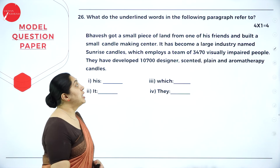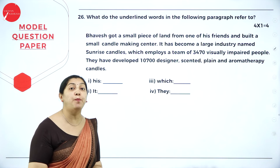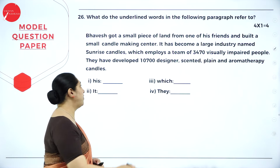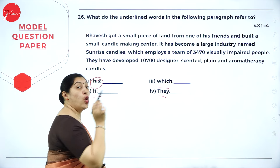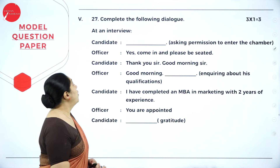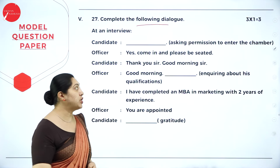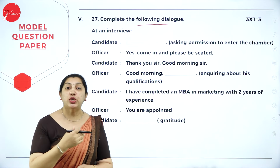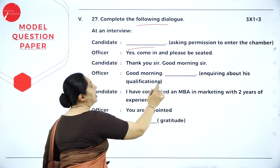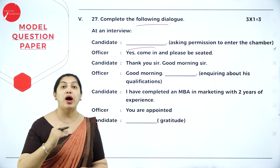Moving on to question number 26: what do the underlined words in the following paragraph refer to? It's a pronoun reference exercise — words like his, it, which, and they — and you must identify whom they refer to in the paragraph. There are four blanks, each carrying one mark. Question number 27 is complete the dialogue, for three marks with three blanks, each carrying one mark. When attending this question, write the complete dialogue and underline your answer — don't write only the answer alone.